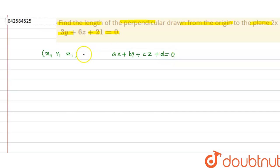So how can we find it? Distance capital D can be given as ax1 plus by1 plus cz1 plus d upon root of a square plus b square plus c square to the whole modulus.